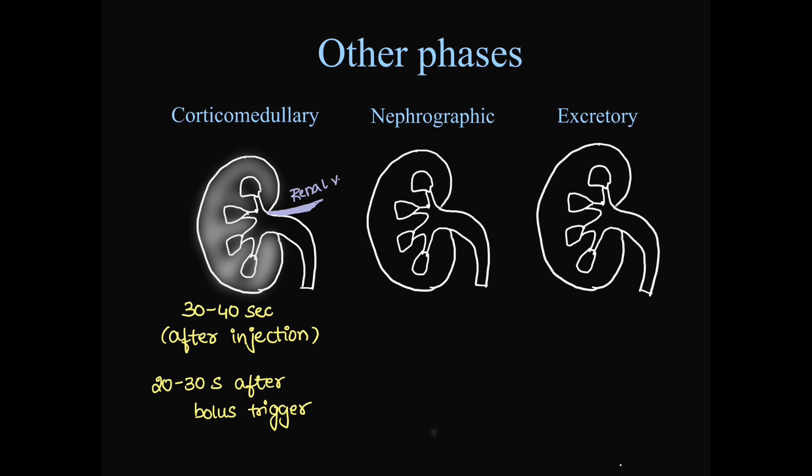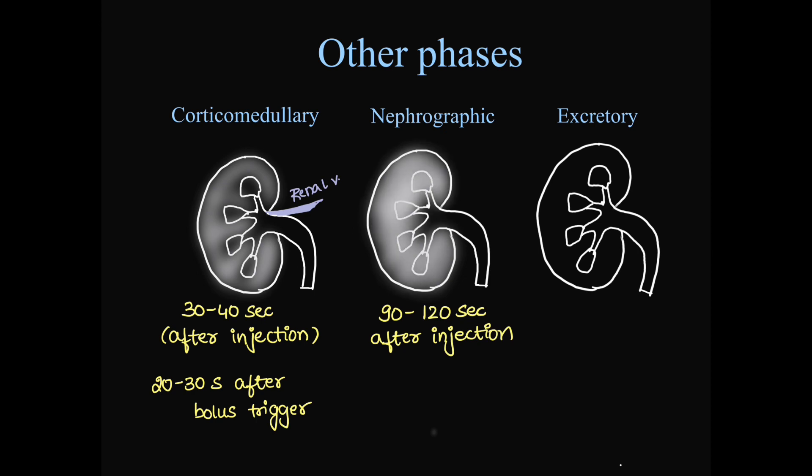Next, we have nephrographic phase which is taken at 90 to 120 seconds after injection. In nephrographic phase, the contrast has moved from cortex to medulla. And also the contrast is present in the cortex slightly. So, there is uniform enhancement of renal parenchyma as shown in the illustration.